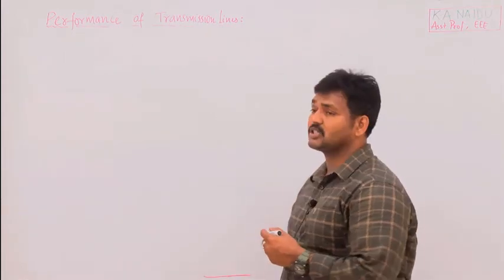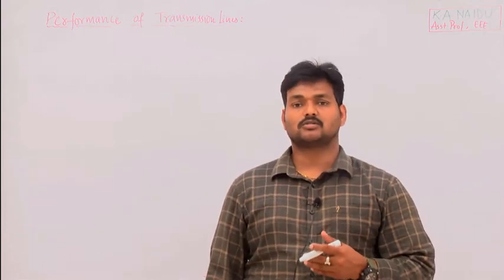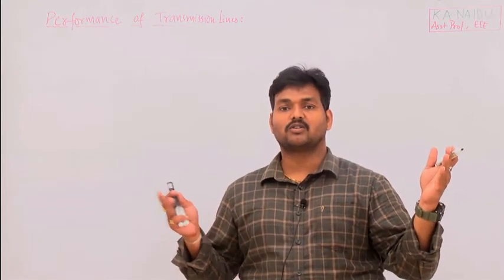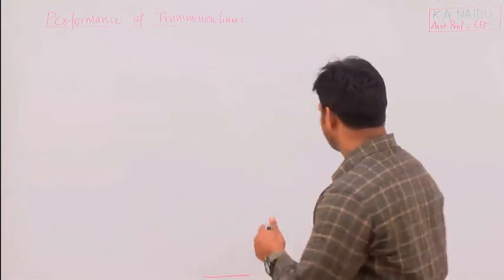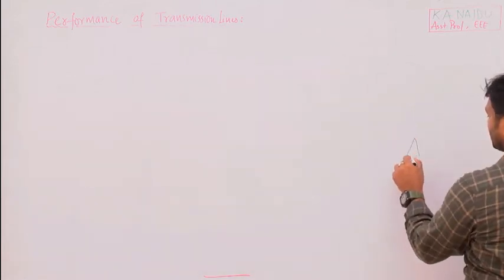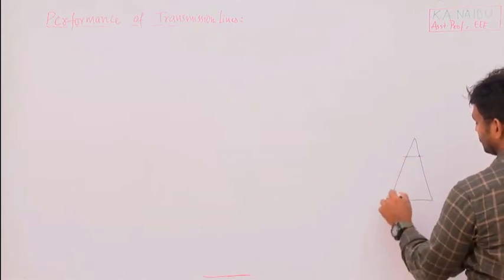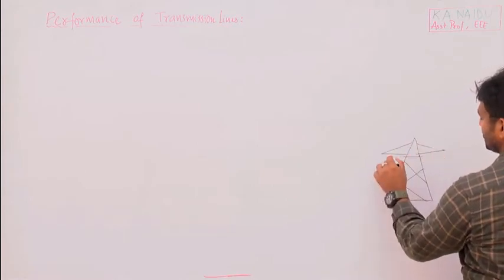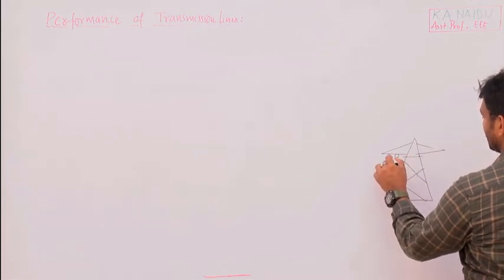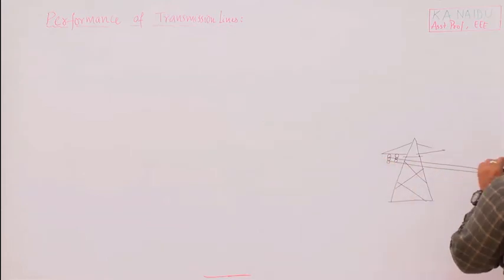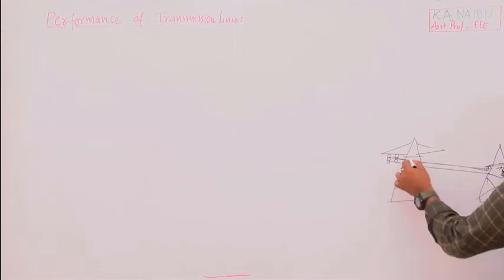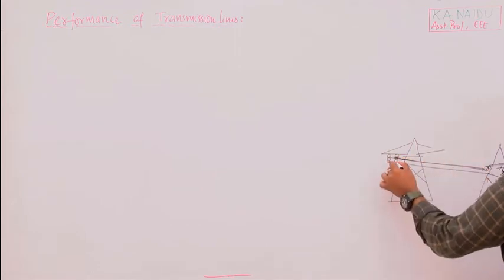First, let us define a transmission line. A transmission line is a conductor or group of conductors used to transmit power from one point to another with the help of transmission towers. The towers have cross arms, insulators, and high voltage conductors carrying power from one point to another. These conductors are called transmission lines.